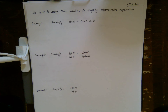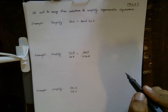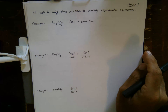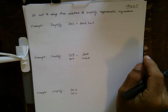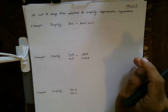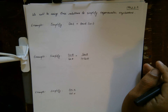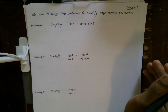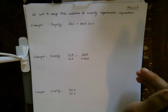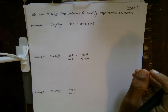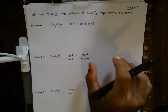Now, using just these basic relationships, let's simplify trigonometric expressions. When it says simplify, it means write it in the simplest possible form — just like with numbers or algebraic terms like polynomials, you cancel out what you can, combine what you can, and have the least number of terms at the end.